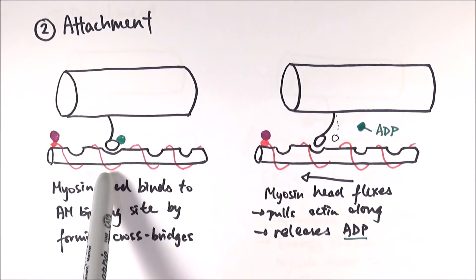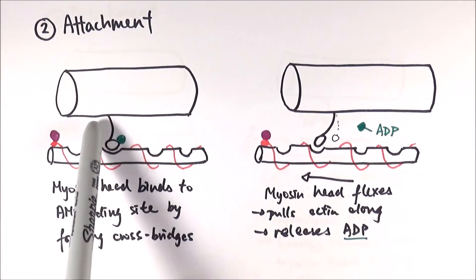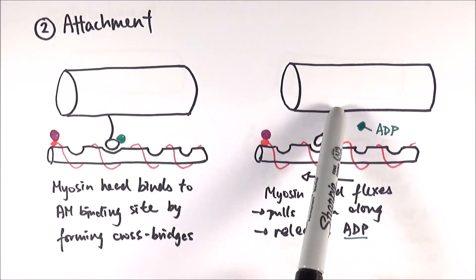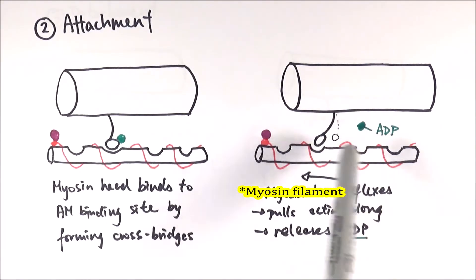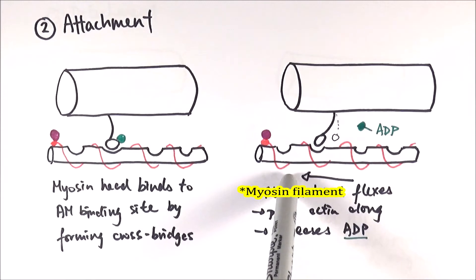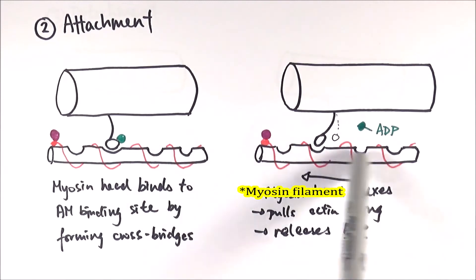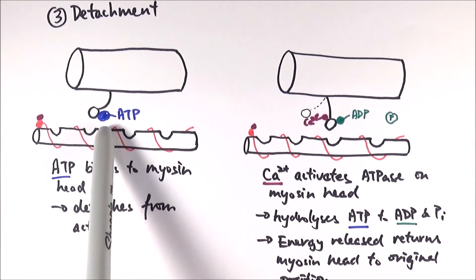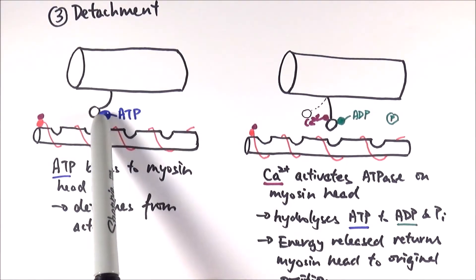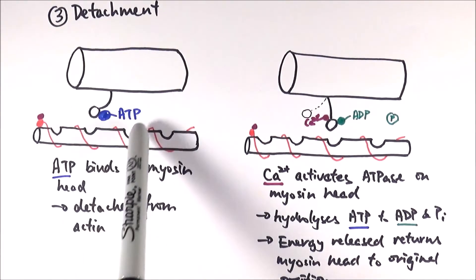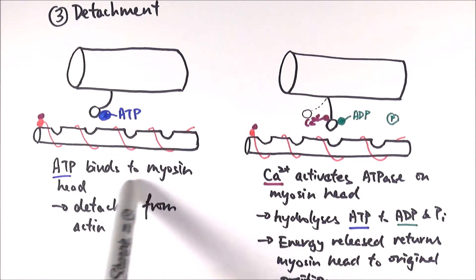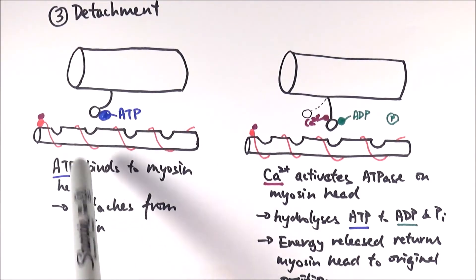Because the actin-myosin binding sites are revealed, the myosin head will then bind to these binding sites, forming cross bridges. The myosin head will then flex itself and pull the actin along with it because it has bound to it at that point. This movement will release ADP from the myosin head. Because it is now not bound to ADP, an ATP will come along and bind to the myosin head. This binding changes the conformational shape of the myosin head, and it will then detach from the actin, breaking the cross bridges.